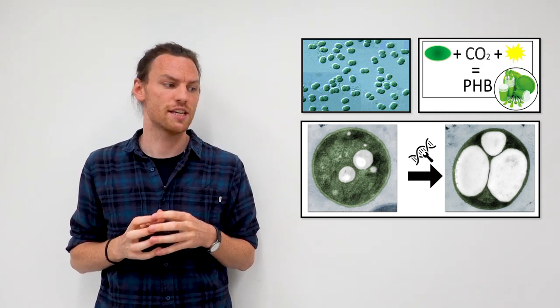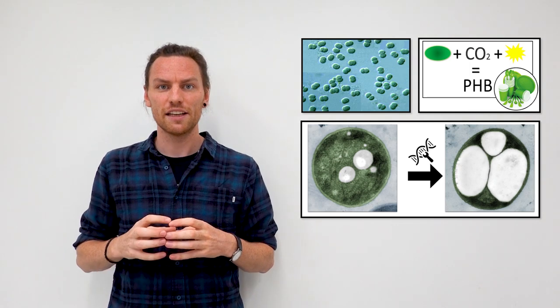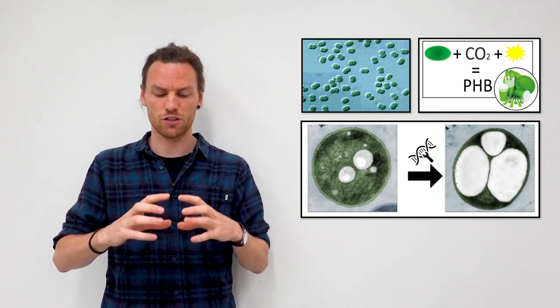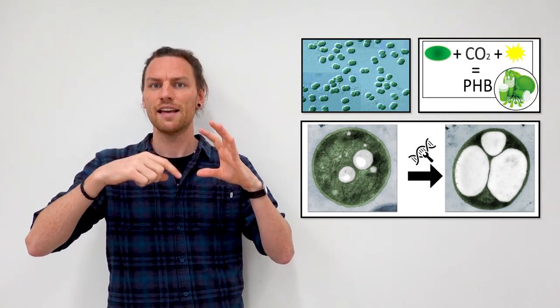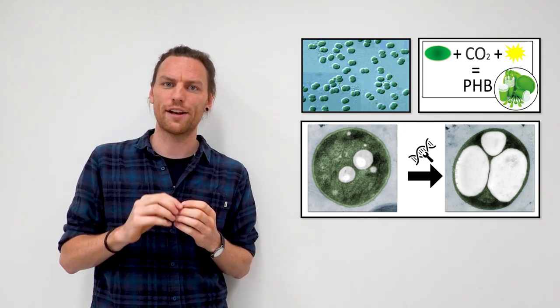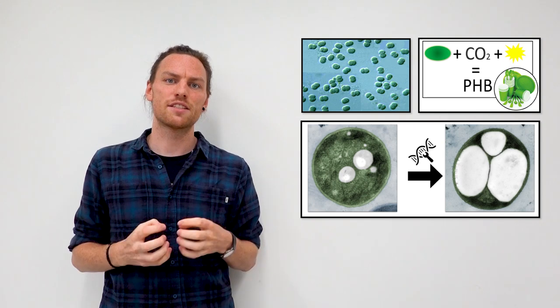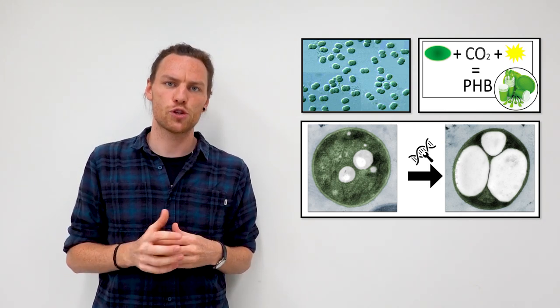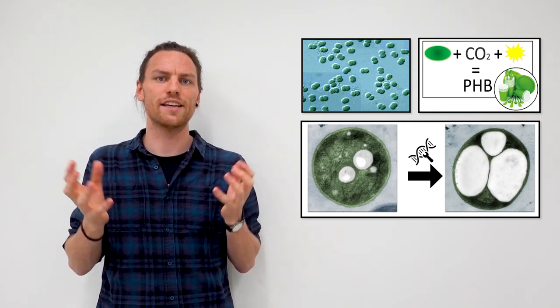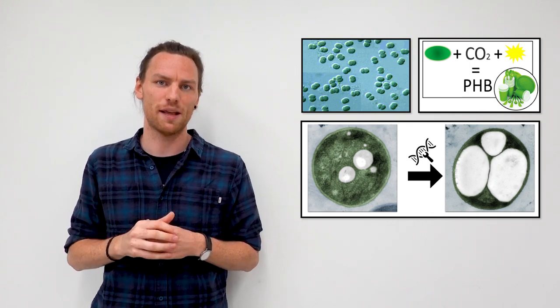The results of this, you can see on the bottom of my slide. Here you have electron microscopic pictures of the cyanobacterial cells. And within those cells, you have these small white granules, that's the bioplastic PHB. And you can see that through my engineering approach, I was able to drastically increase the amount of bioplastic within those cells.